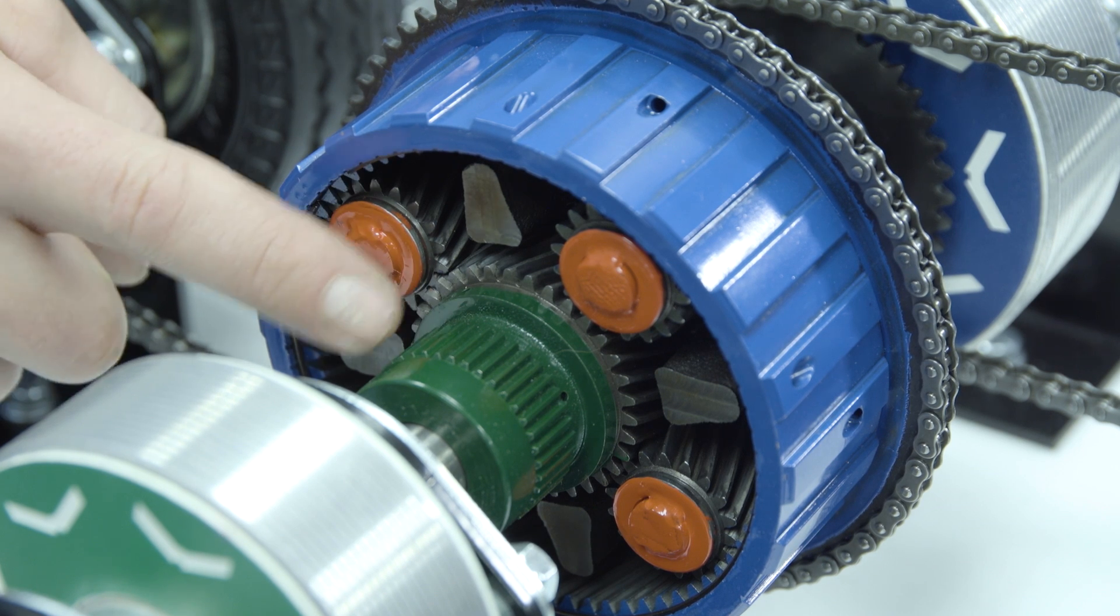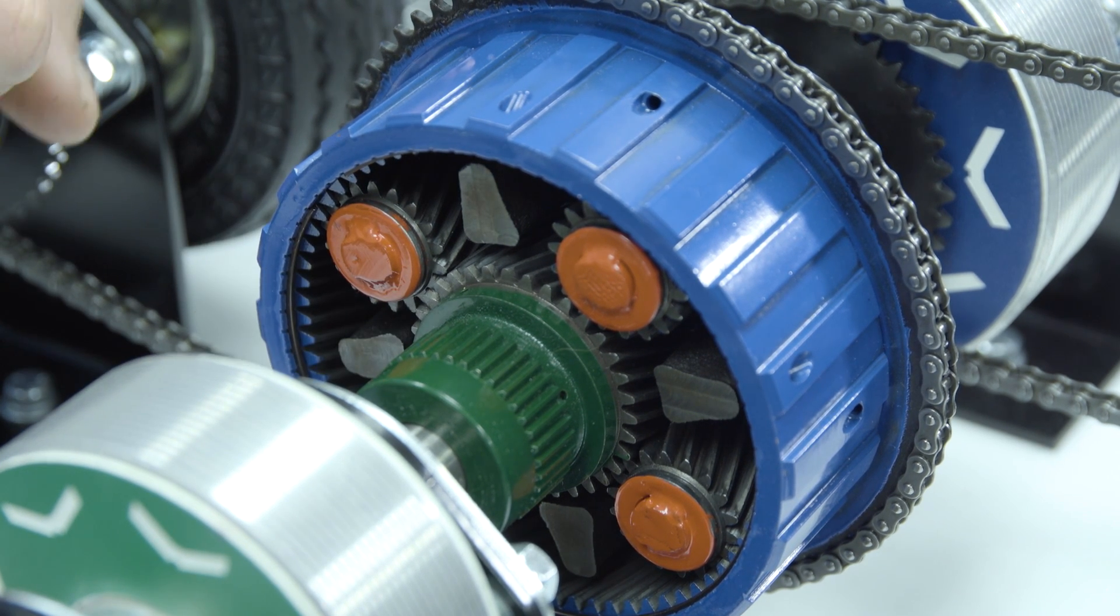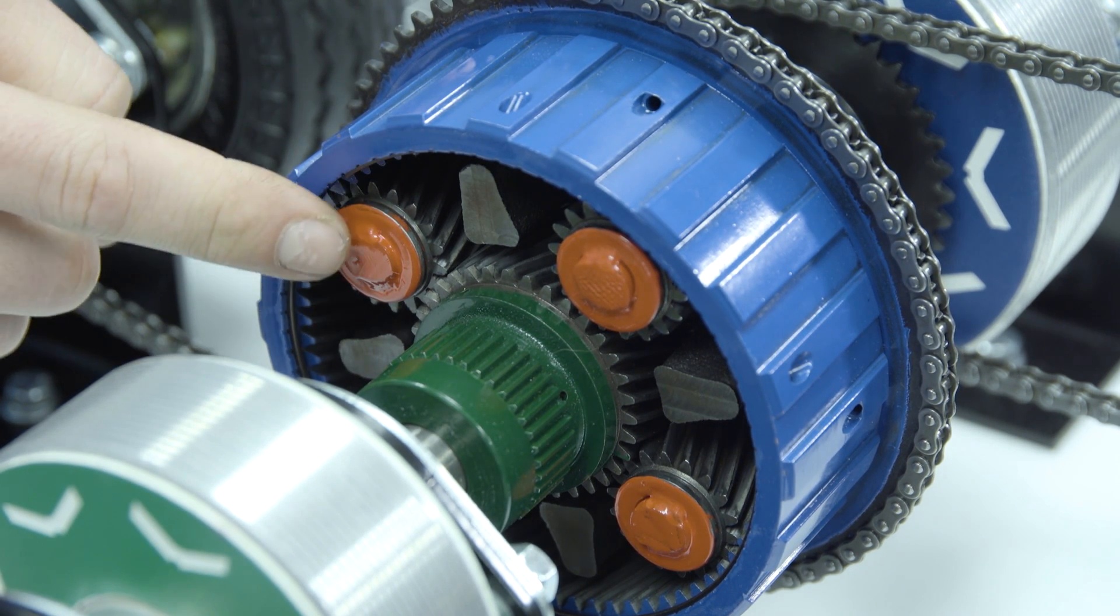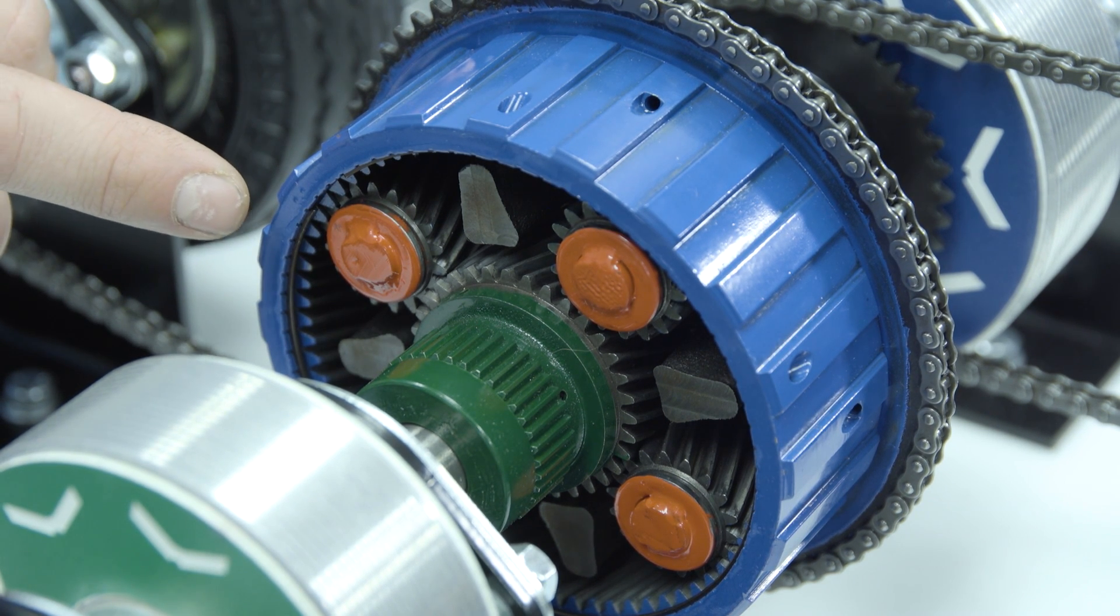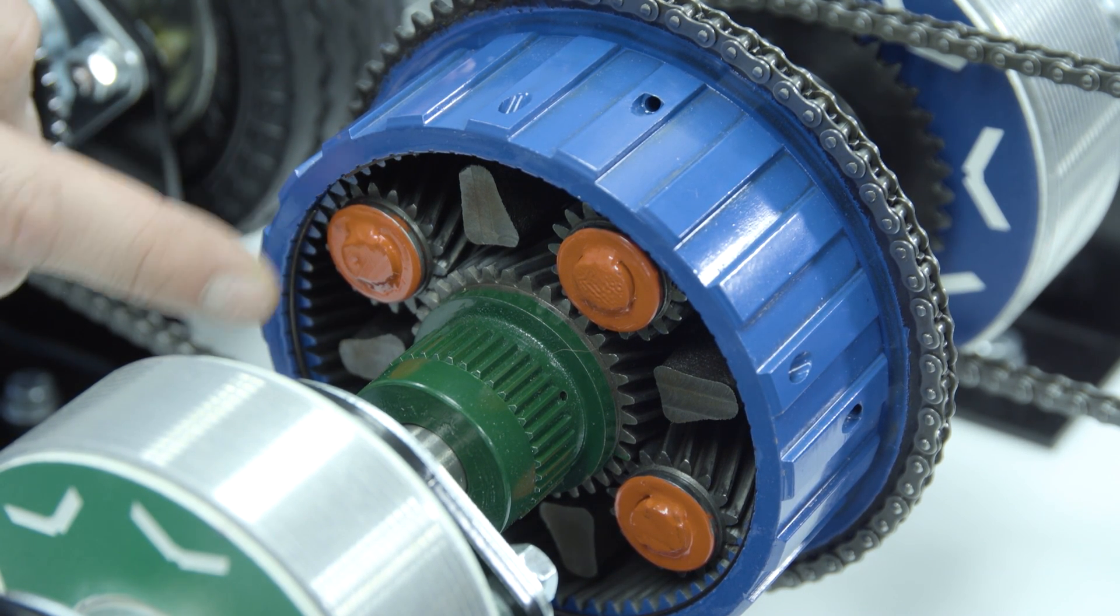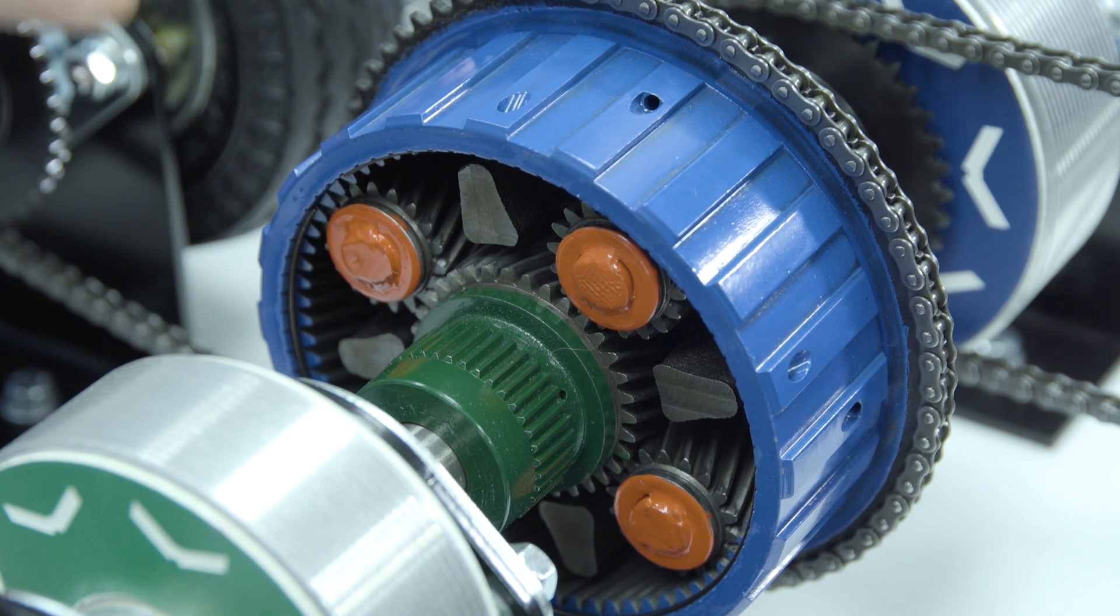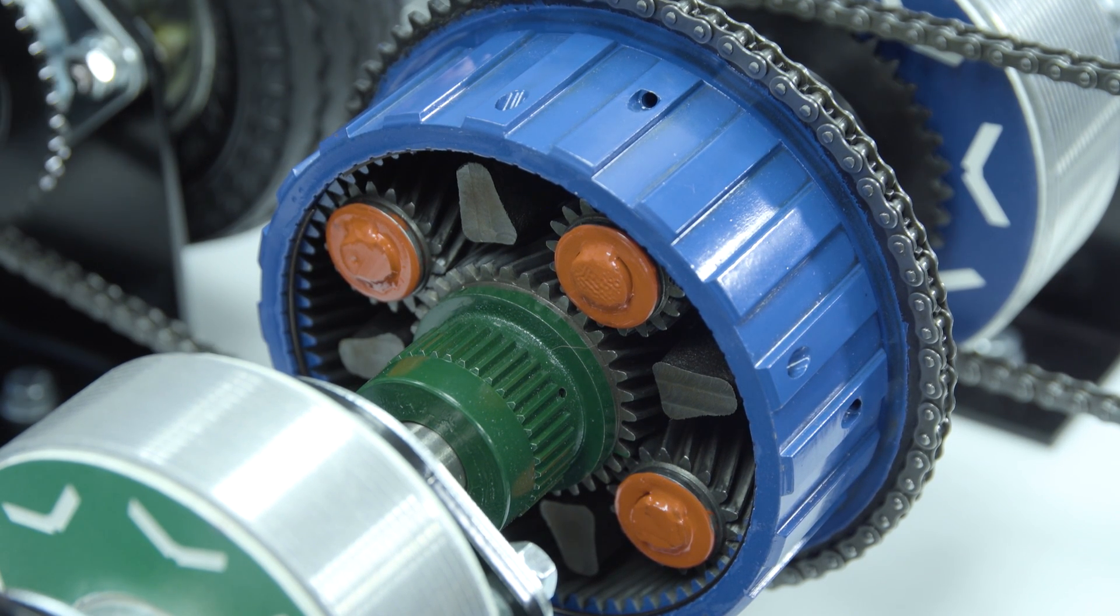We have the sun gear at the center which is green, which is connected to our MG1. We have the planet carrier which is red, which is connected to our internal combustion engine. And then we have the blue internal or ring gear which is connected to both our drive wheels and to MG2.